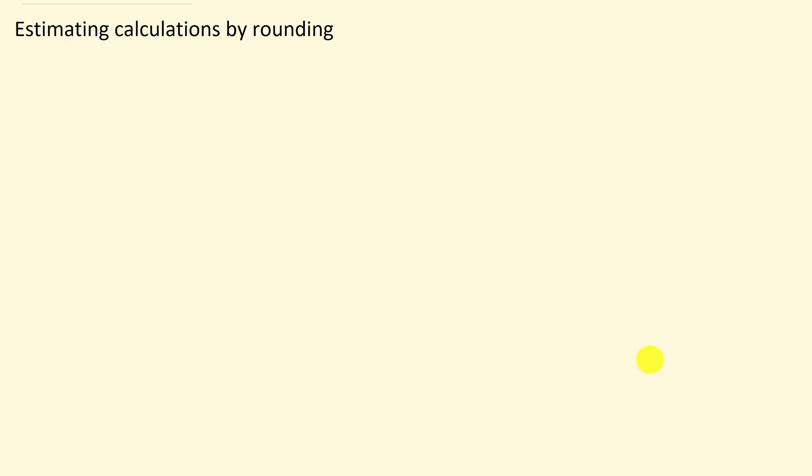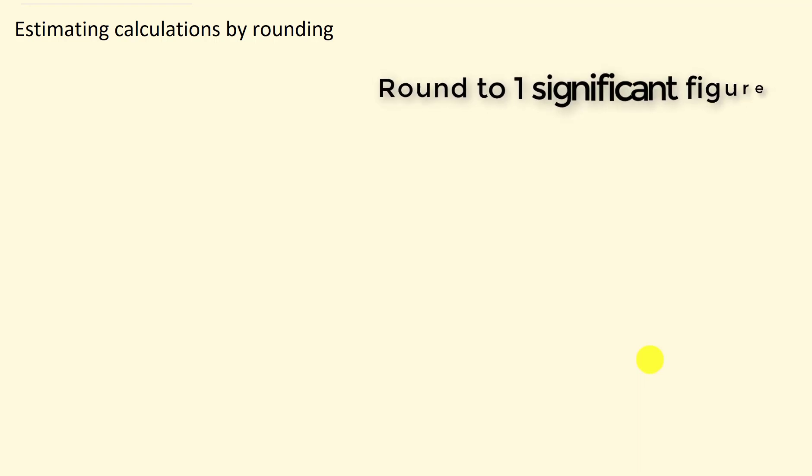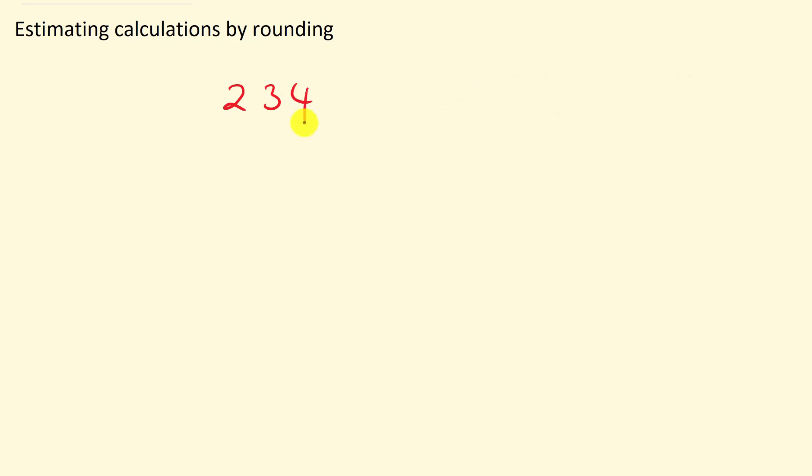One important thing before you start doing estimation: you will need to round the numbers to one significant figure. Let's quickly have a look at some examples of how to round to one significant figure. Say for example we have 234 — I want to round this number to one significant figure.